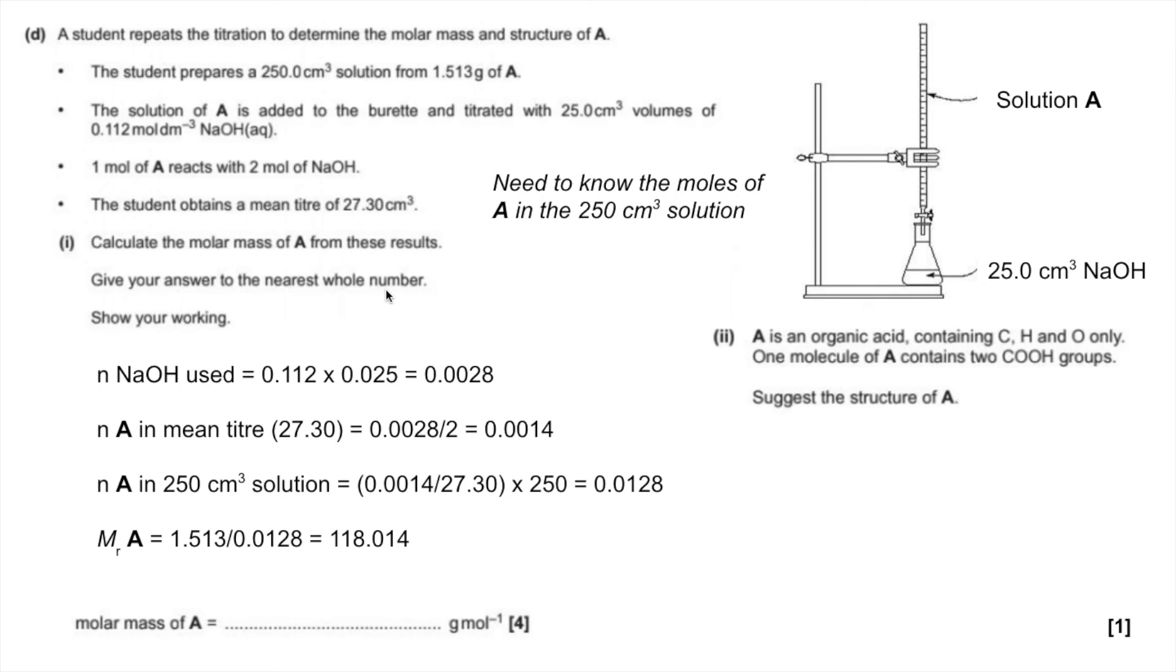Finally, A is an organic acid. It contains C, H and O only. One molecule of A contains two COOH groups - that's where that ratio comes from by the way. First thing I'm going to do is work out the Mr of two COOH groups. That's 90.